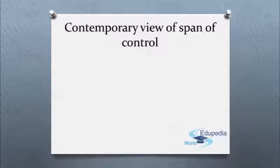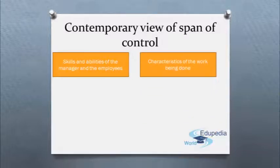The contemporary view of span of control recognizes that many factors influence the appropriate number of employees a manager can efficiently and effectively manage. These factors include the skills and abilities of the manager and the employees and the characteristics of the work being done.